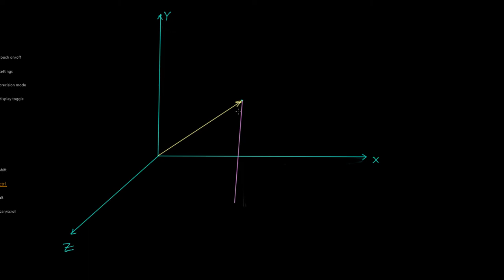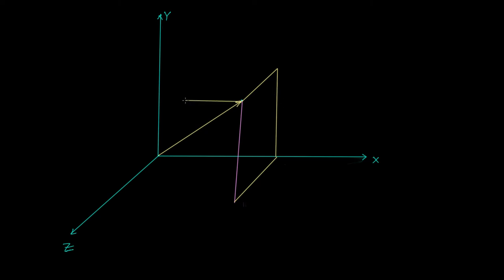Now, after having dropped this perpendicular, let us try to draw lines parallel to the z-axis. Here I draw a line that is parallel to the z-axis, and similarly I do the same thing here — this is also parallel to the z-axis. Here I draw a line that is parallel to the y-axis, and here the same parallel to the y-axis. All the lines I am drawing are parallel either to the x, y, or z-axis.